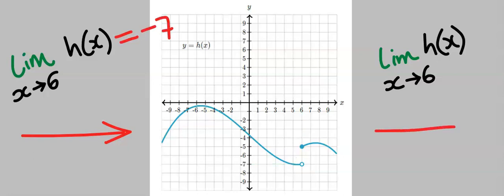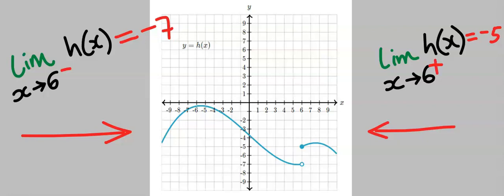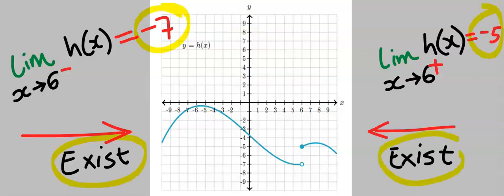Next, approaching this function from the right, we consider the right-hand line. The limit of h(x) as x tends to 6 from the right-hand side is minus 5. The approach from the left and from the right both exist but are not equal — this is also jump discontinuity — and we conclude that the limit of h(x) does not exist.